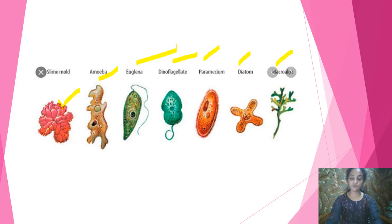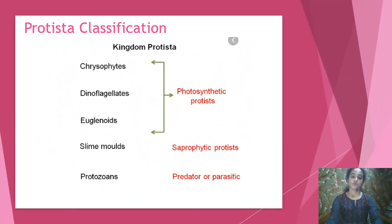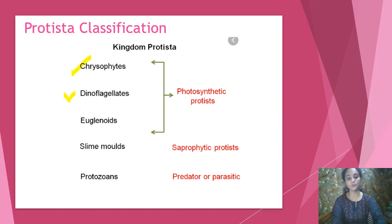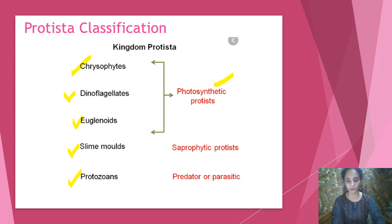Kingdom Protista is divided into five groups. First is chrysophytes, second dinoflagellates, third euglenoids, fourth slime molds, and fifth protozoans. Chrysophytes, dinoflagellates, and euglenoids are photosynthetic protists — they prepare their own food. Slime molds are saprophytic protists. Protozoans are either predators or parasitic.